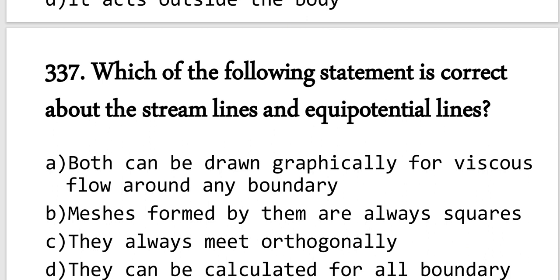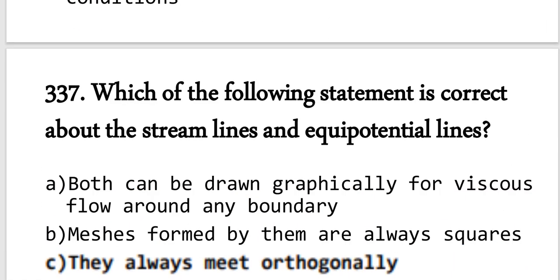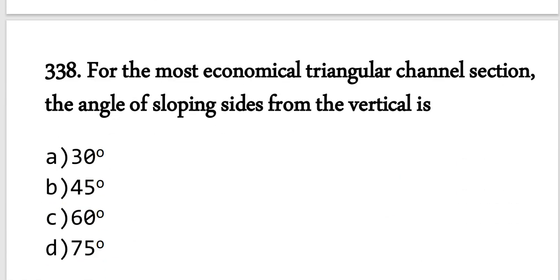Question number 337: Which of the following is correct about streamlines and equipotential lines? They are orthogonal — they always meet at a 90-degree angle. Option C is correct.